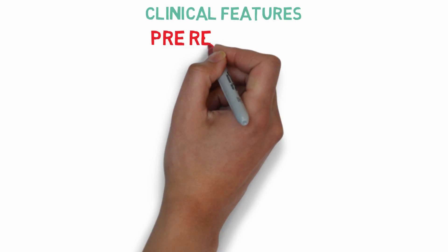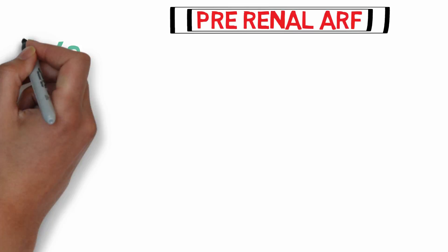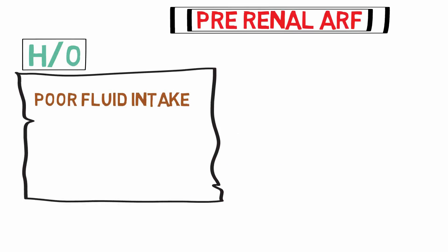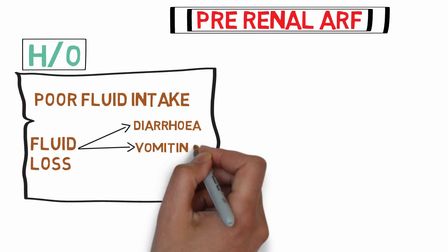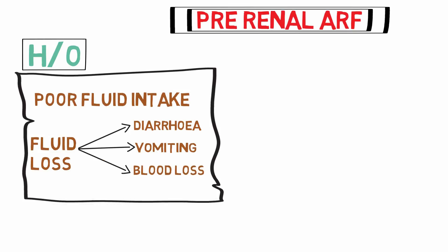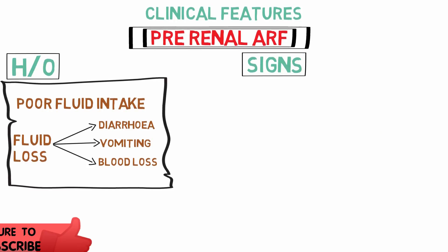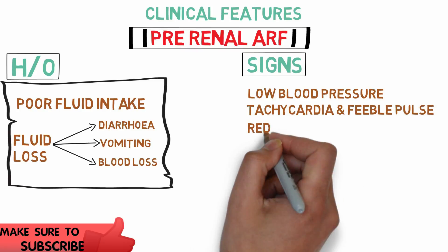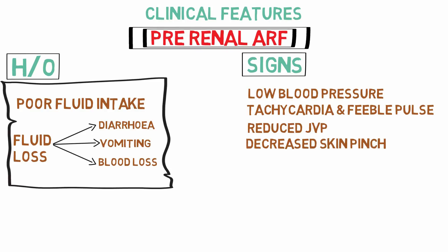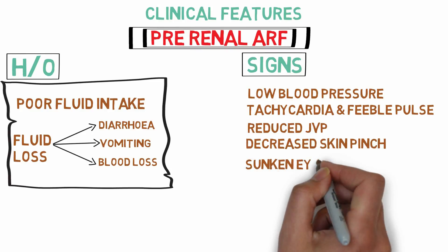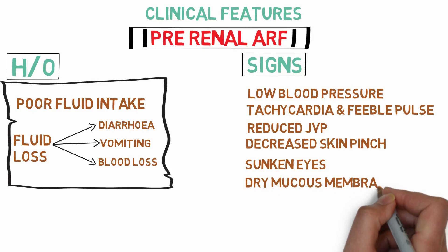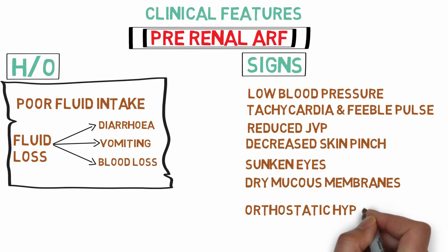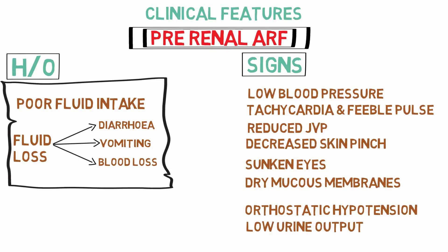Discussing the clinical features of acute renal failure, first we will talk about pre-renal ARF. Most patients of pre-renal ARF have a history of poor fluid intake or fluid loss in the form of diarrhea, vomiting, or blood loss. Signs are consistent with dehydration: low blood pressure, tachycardia, feeble pulse, reduced jugular venous pressure, decreased skin pinch, sunken eyes, dry mucous membranes, and orthostatic hypotension. Low urine output is almost a consistent feature.